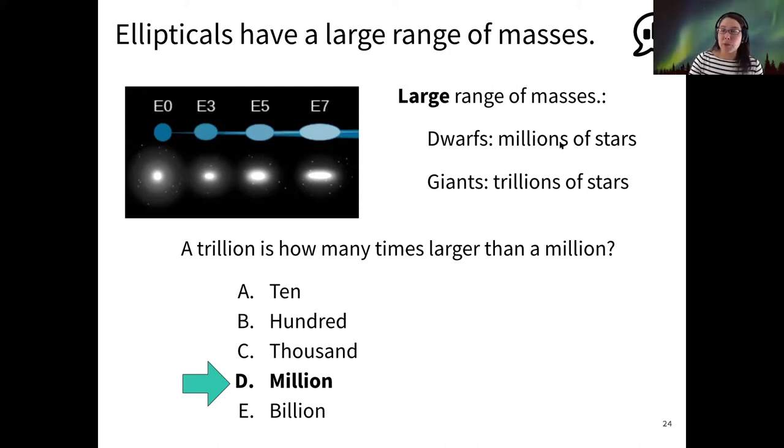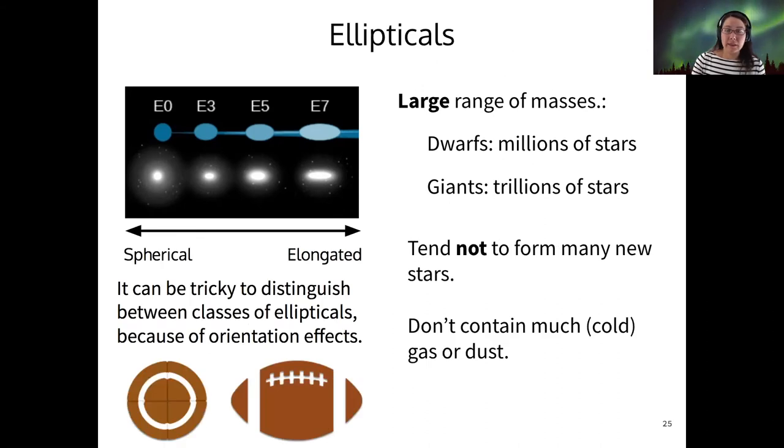But just to get you warmed up, this is why we're interested in studying scientific notation, because we are already running into very large numbers and we need to be able to deal with them easily. All right, so another fact about ellipticals is that they tend not to form very many new stars. And that is because they don't contain very much cold gas or dust. And it is from cold gas and dust that stars are formed. So they just don't have a lot of raw material to form a lot of new stars. Therefore, there's not a lot of active star formation in ellipticals.